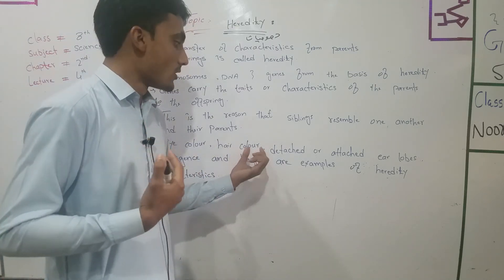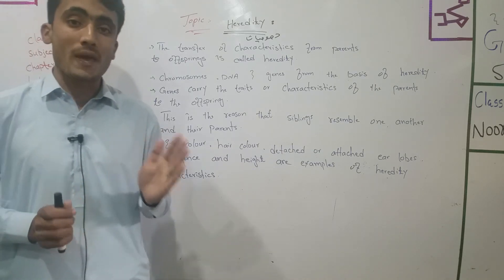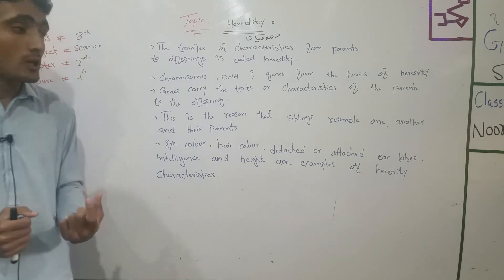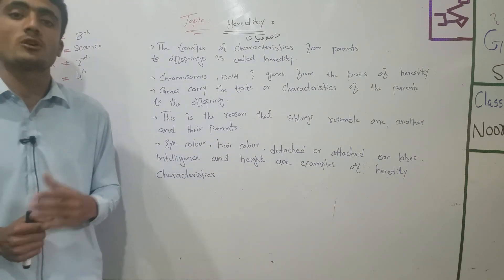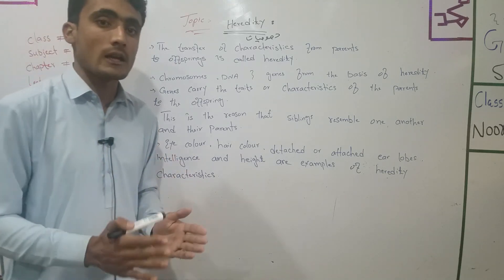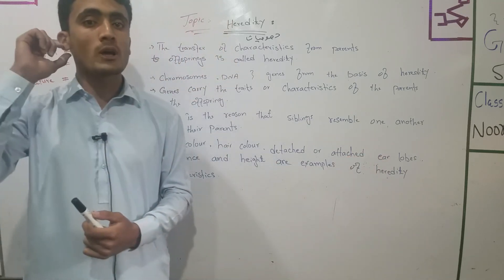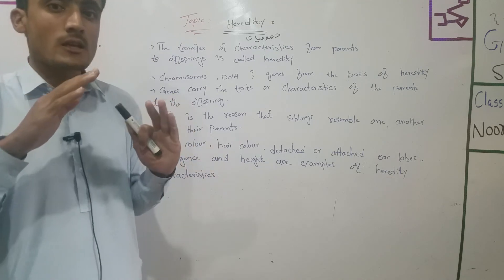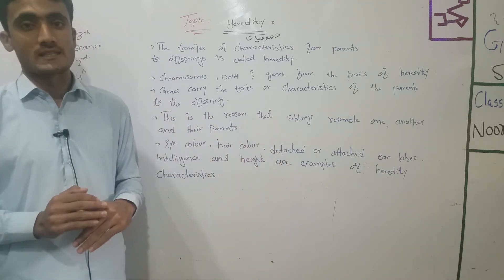The parents' eye color — for example, the parents have green eyes — these traits come to the offspring. Eye color, hair color, and attached or detached earlobes all come from the parents to the offspring as hereditary characteristics.